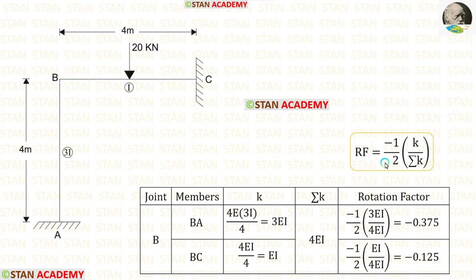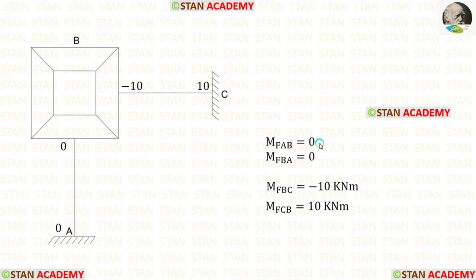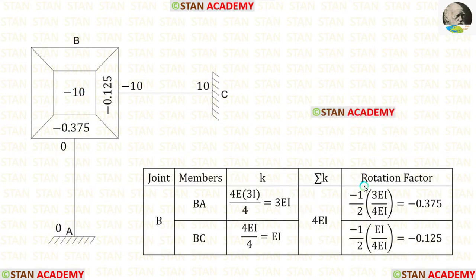Now let us find the rotation factors. The formula is minus 1 upon 2 times k upon sigma k. We have calculated the values of k and sigma k. Using the formula, we can find the rotation factors. In joint B, we make a rectangle. The rotation factor for BA is minus 0.375 and the rotation factor for BC is minus 0.125.